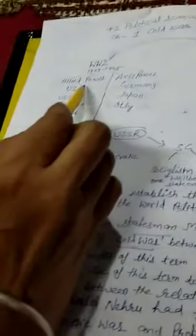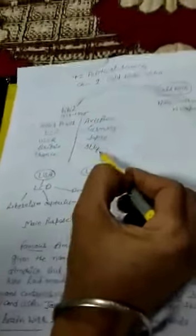Allied Power had four countries: USA, USSR, Britain, and France. Axis Power had three countries: Germany, Japan, and Italy.